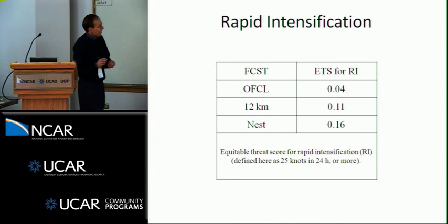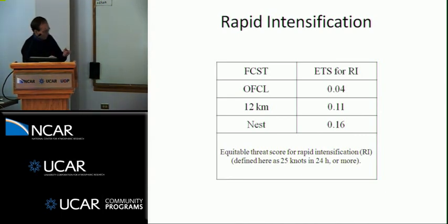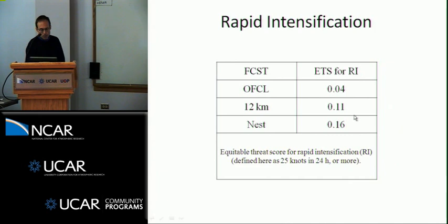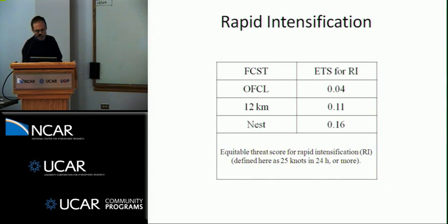On rapid intensification: can the model detect an increase of 25 knots in 24 hours? It's set up as a standard two-by-two contingency table, where a hit is predicting a 25-knot change in the correct 24-hour period. The skill by that definition is highest for the high-resolution forecasts. The official forecasts are not necessarily trying to predict rapid intensification explicitly — they have to be somewhat conservative — so that's not a surprise. The main point is that you gain something relative to coarse resolution for rapid intensification.